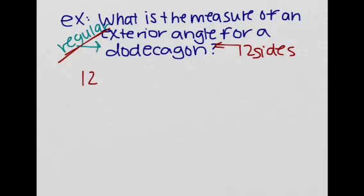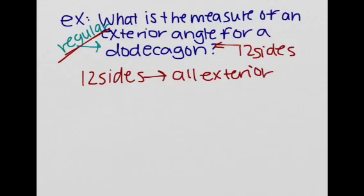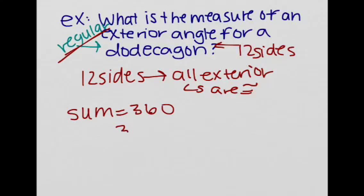So 12 sides, and a regular polygon means that all the exterior angles are congruent. So we know that the sum is equal to 360, so we are going to do 360 divided by 12, and this is equal to 30.